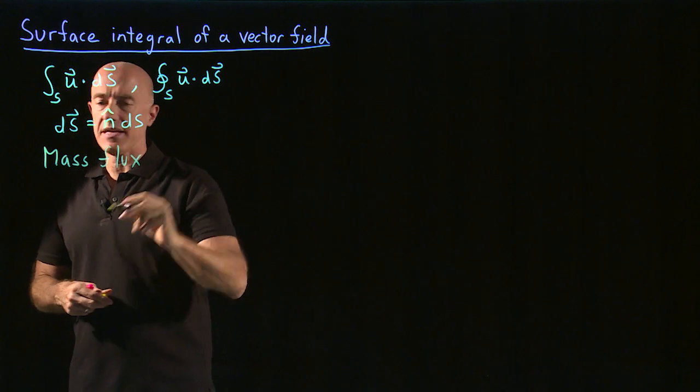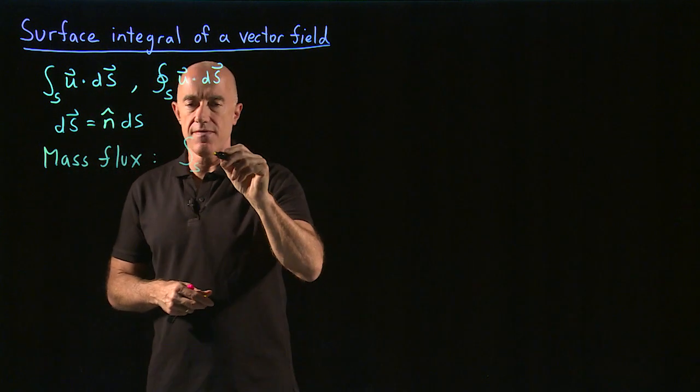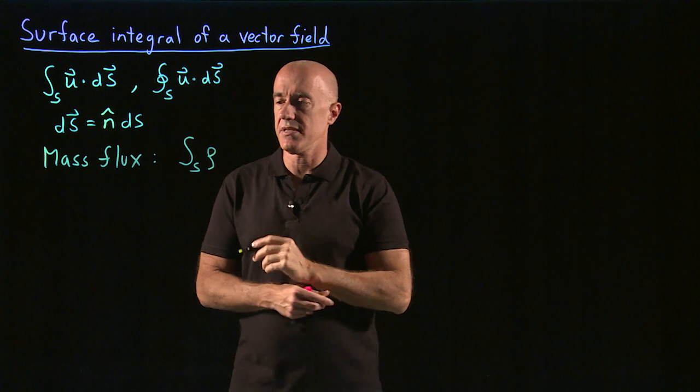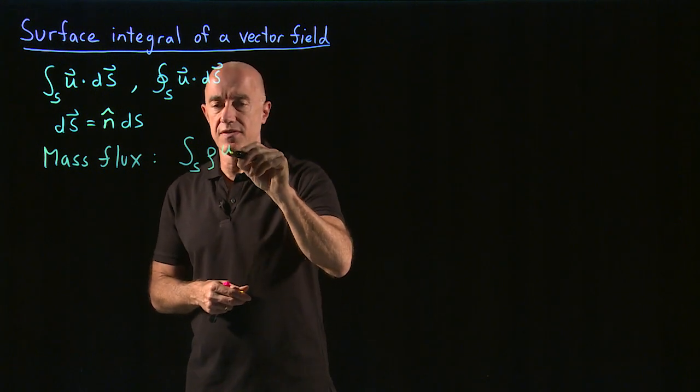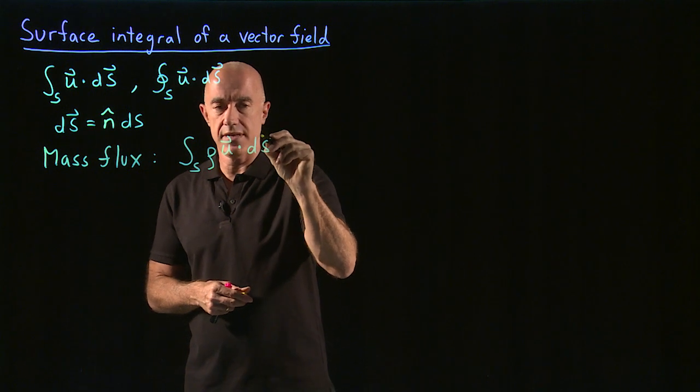So the mass flux is computed as a surface integral of the density, say of a fluid, for instance, the density of the fluid times the velocity of the fluid dotted into ds.